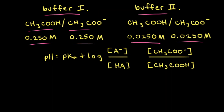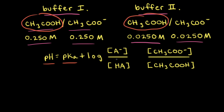Let's calculate the initial pH of both buffer solutions using the Henderson-Hasselbalch equation. In the Henderson-Hasselbalch equation, the pH of the solution is equal to the pKa of the weak acid, which for both buffers is acetic acid, plus the log of the concentration of the conjugate base divided by the concentration of the weak acid. In this case, the conjugate base is the acetate anion, so the concentration of the acetate anion divided by the concentration of acetic acid.